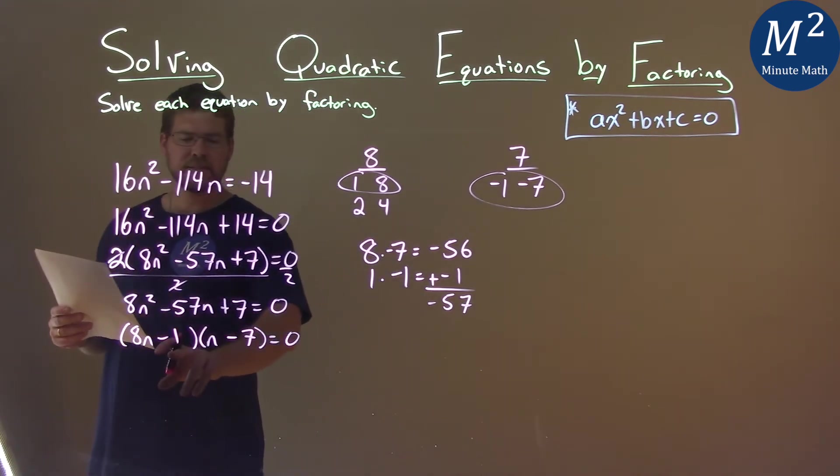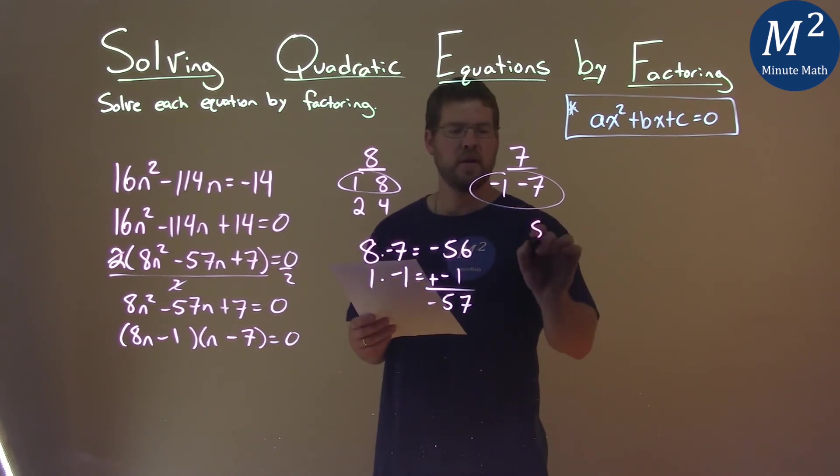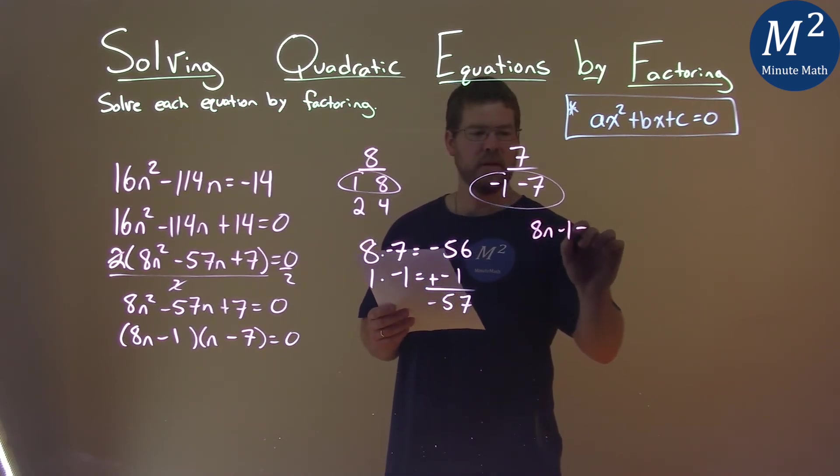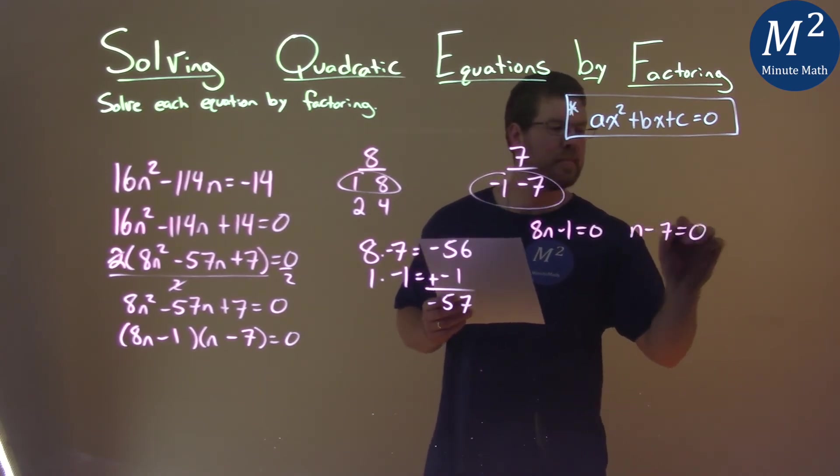So now we can set each part individually and solve. So let's do that over here, a little running out of space. So if 8n minus 1 equals 0, and I have n minus 7 equal to 0.